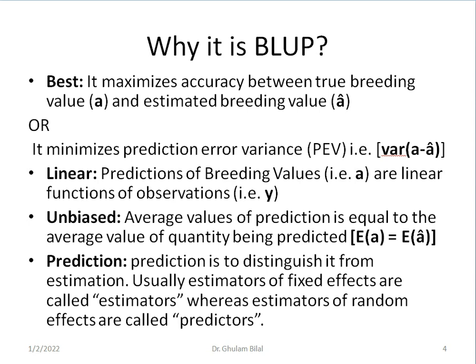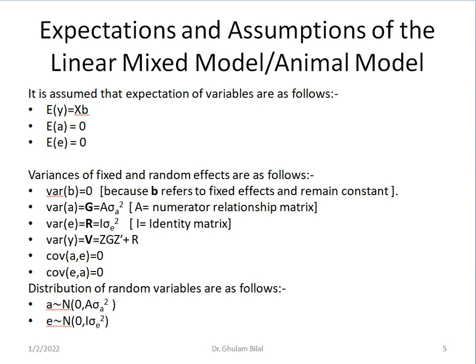It is unbiased because average values of prediction equal the average value of quantity being predicted. So expected value of A equals expected value of A hat. And prediction is to distinguish it from estimation. Estimators of fixed effects are called estimators, whereas estimators of random effects are called predictors. Prediction distinguishes it from estimation. The same thing, but for random effects, we call it prediction.